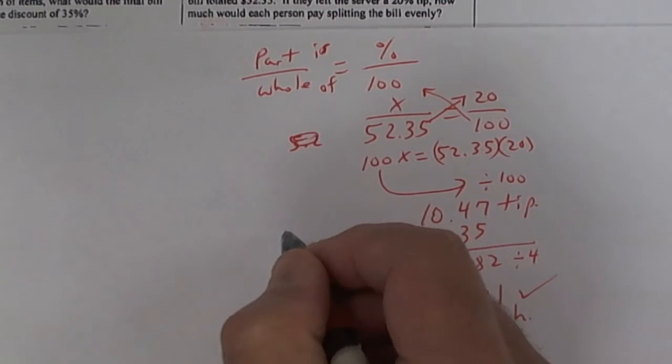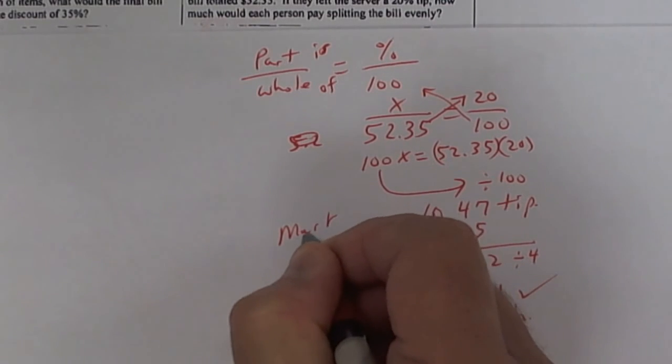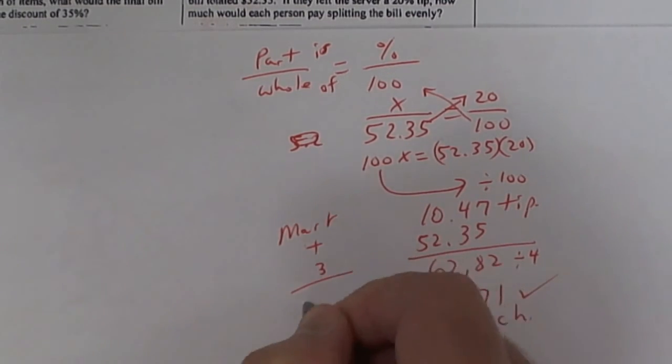Remember, it's Mark plus three of his friends, so that makes four people all together.